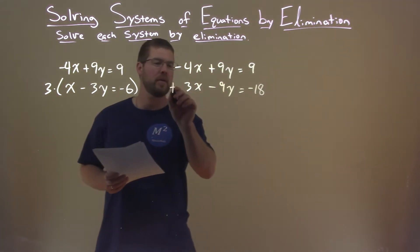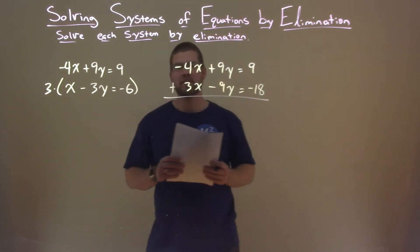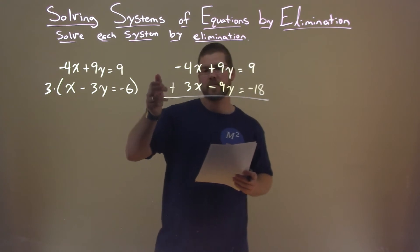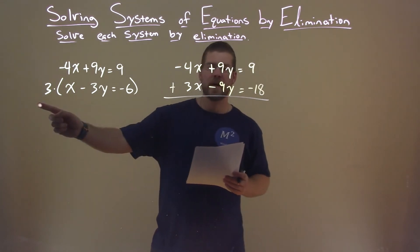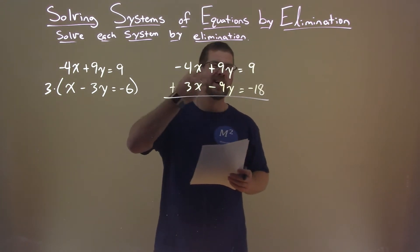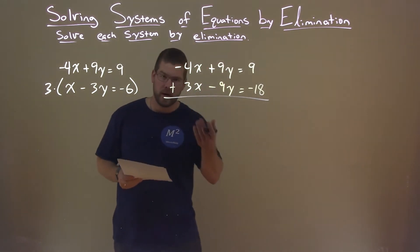And the reason why I did that is I wanted this to be a negative because I prefer to add the two equations. If I had multiplied a negative 3, it would have been a positive 9y, and I'd have to subtract the 2. It makes it more difficult, in my opinion.